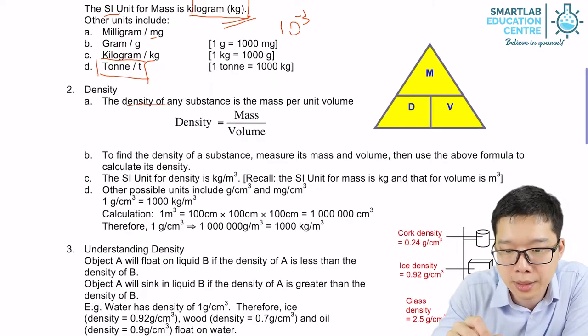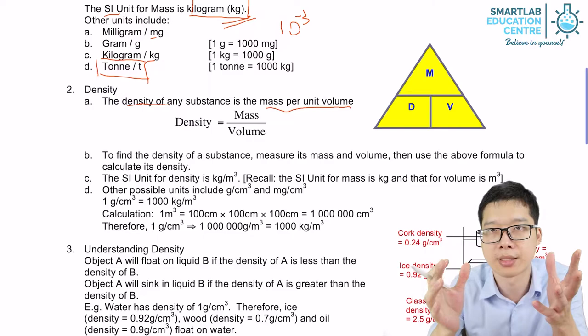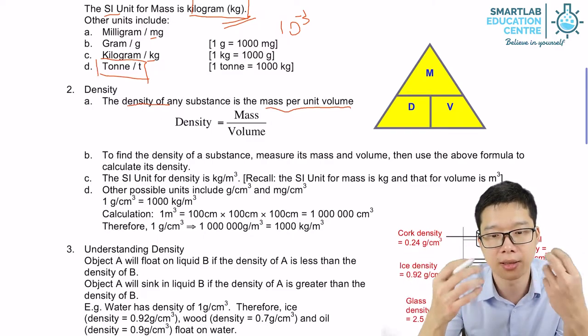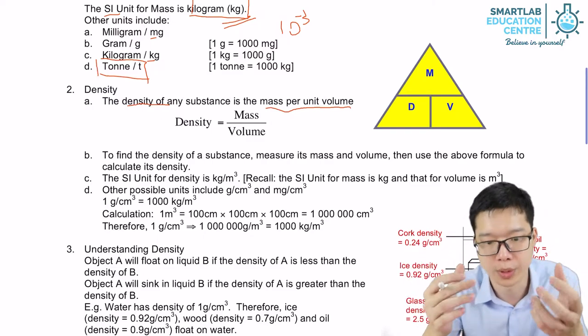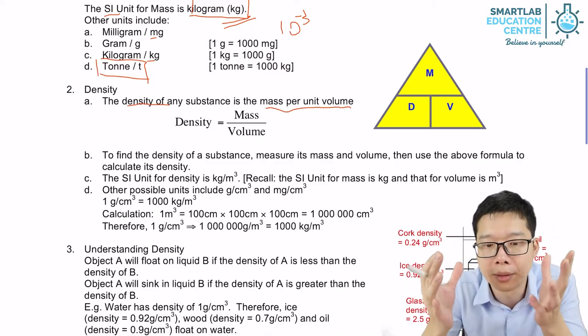Density is mass per unit volume. Mass is the amount of matter. Density in these ways means amount of matter per unit volume.